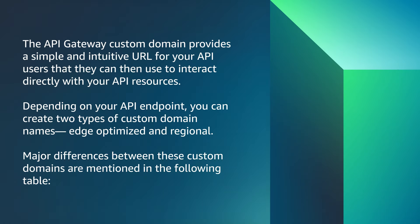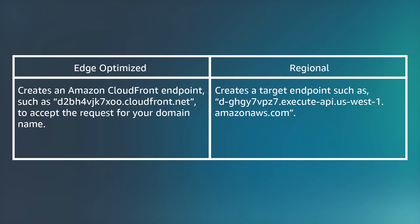The API Gateway custom domain provides a simple and intuitive URL for your API users that they can then use to interact directly with your API resources. Depending on your API endpoint, you can create two types of custom domain names: Edge Optimized and Regional. Major differences between these custom domains are mentioned in the following table. You can also see these differences on the AWS Knowledge Center article associated with this video.